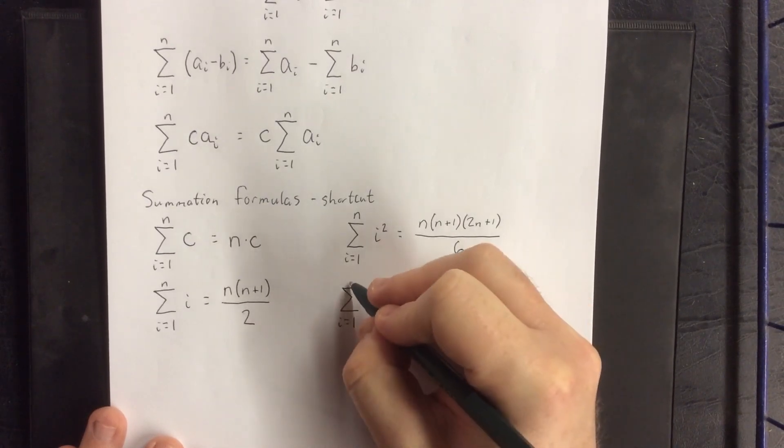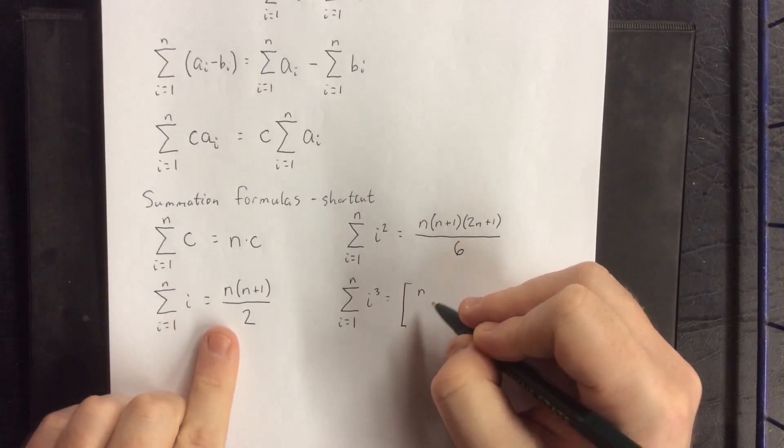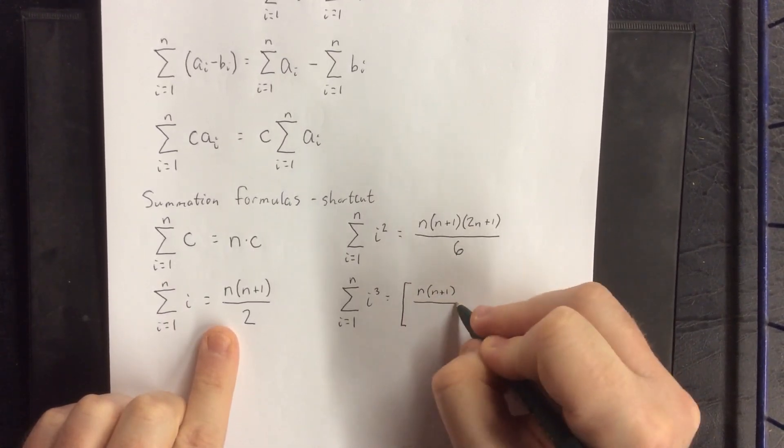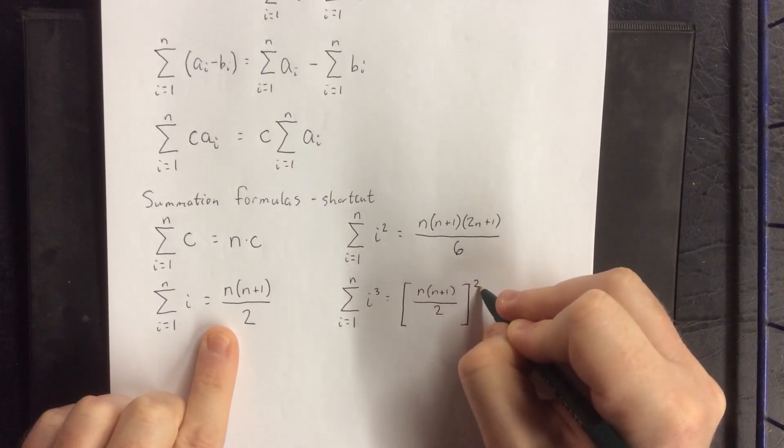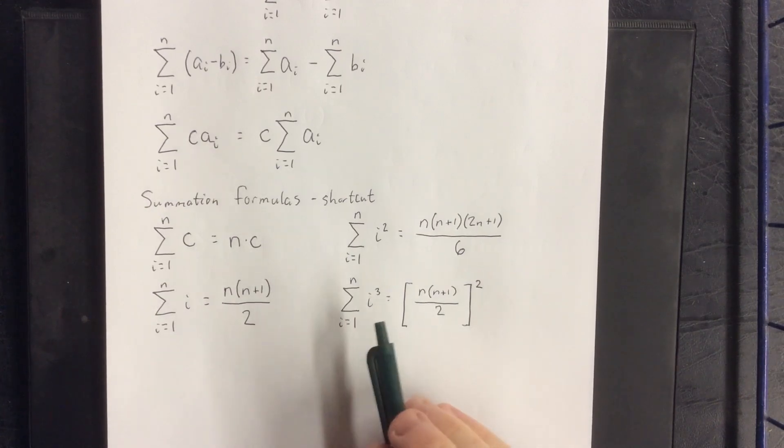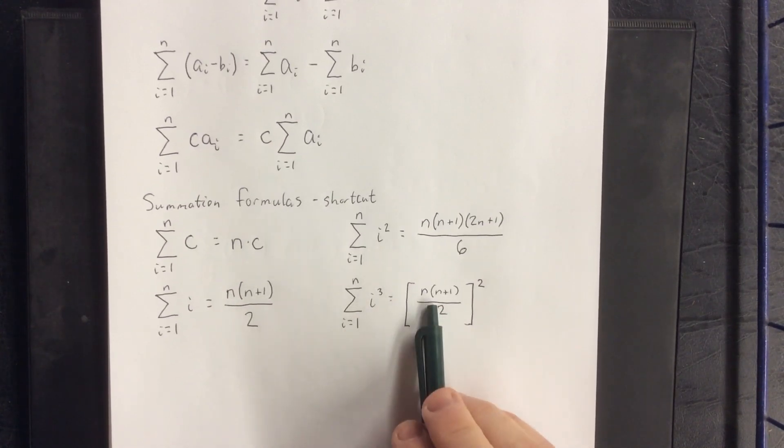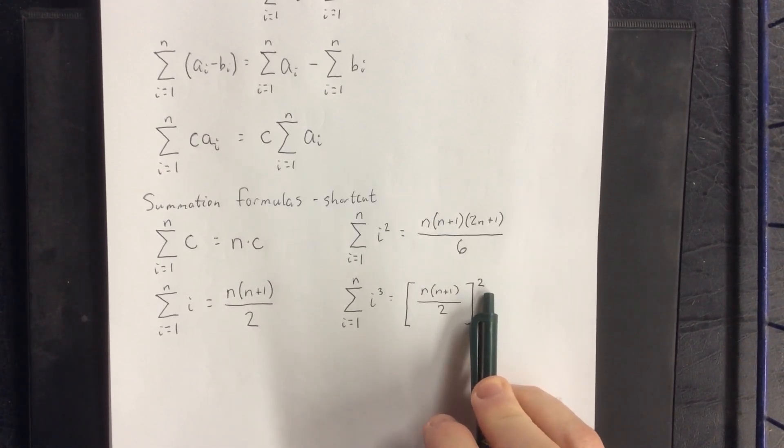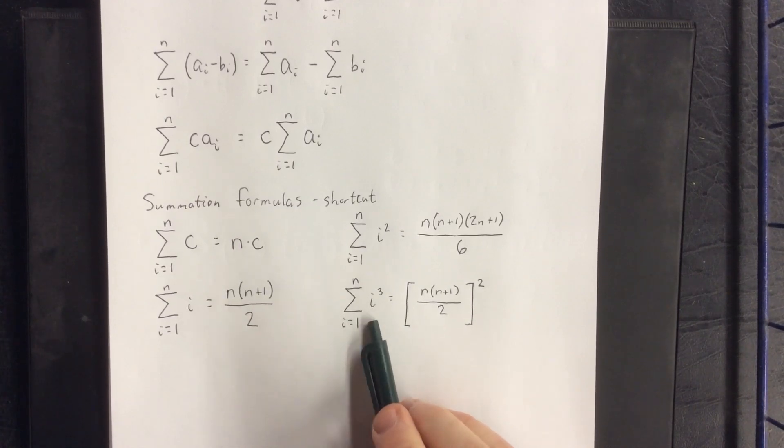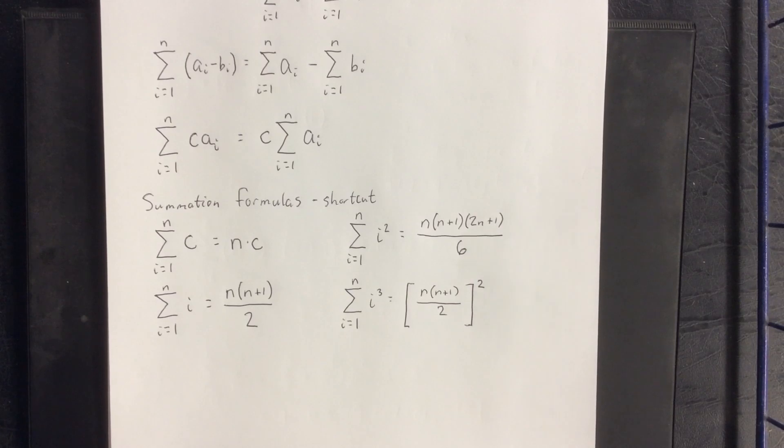And finally, the summation from i equals 1 to n of i cubed is the same as this formula over here, with the exception that the result is squared. For example, if I wanted to add together 1 cubed plus 2 cubed plus 3 cubed plus 4 cubed, I could simply plug n equals 4 into this formula and get 4 times 5 divided by 2, which is 10, squared, which is 100. That lets me know that 1 cubed plus 2 cubed plus 3 cubed plus 4 cubed is 100. This is just a little shortcut to help you out with these summations. We'll talk about their application in future videos.